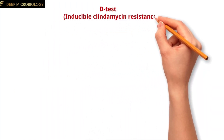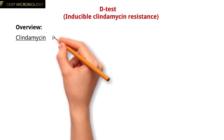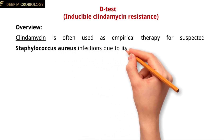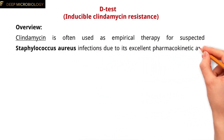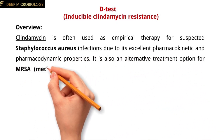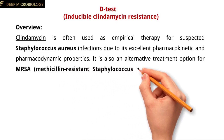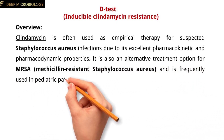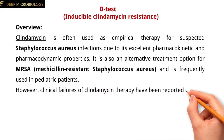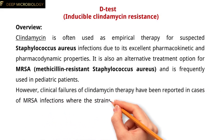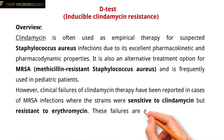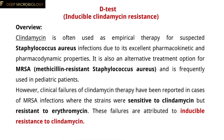Clindamycin is often used as empirical therapy for suspected Staphylococcus aureus infections due to its excellent pharmacokinetic and pharmacodynamic properties. It is also an alternative treatment option for MRSA, methicillin-resistant Staphylococcus aureus, and is frequently used in pediatric patients. However, clinical failures of clindamycin therapy have been reported in cases of MRSA infections where the strains were sensitive to clindamycin but resistant to erythromycin. These failures are attributed to inducible resistance to clindamycin.